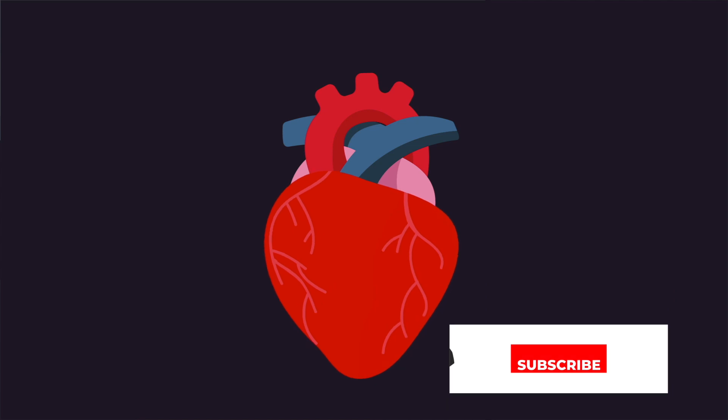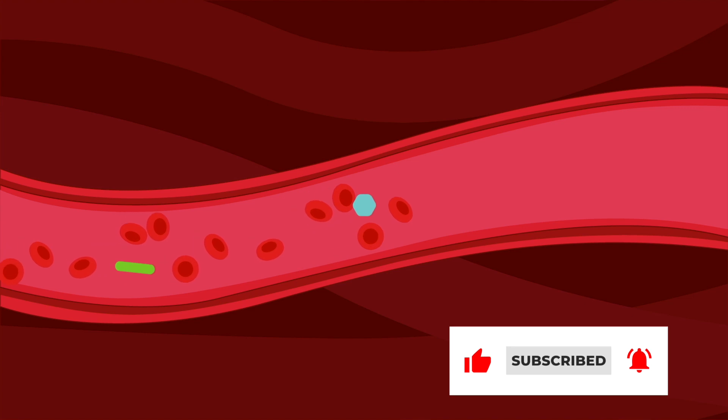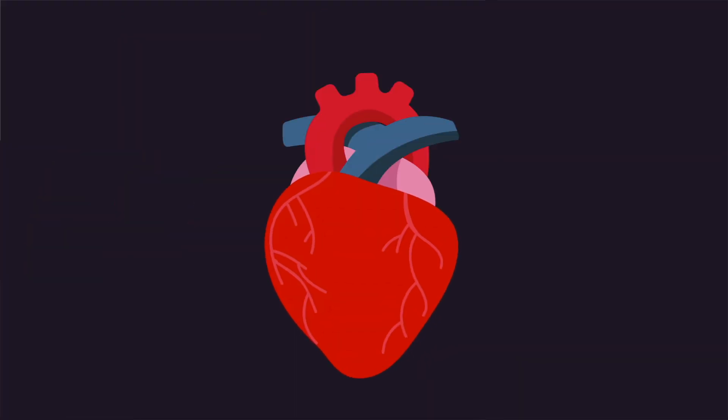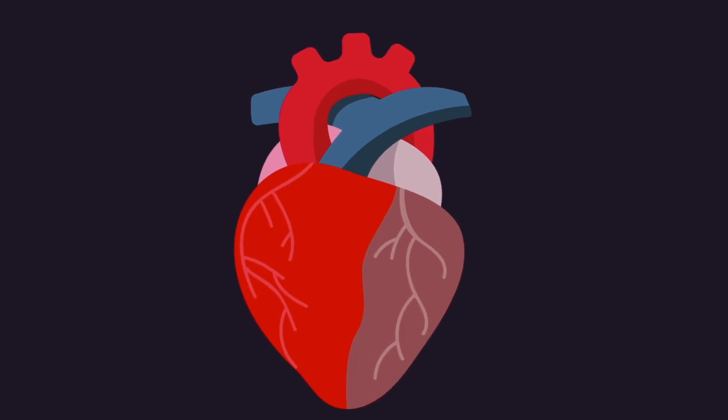Our heart needs constant energy to do all this work, which comes from the special blood vessels of the heart. If there is any blockage in any of these vessels, that part of the heart muscle starts to die. It cannot survive without oxygen for long. This is a heart attack.